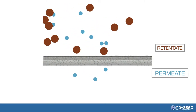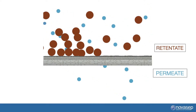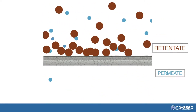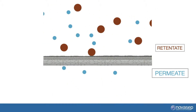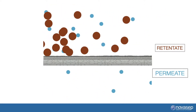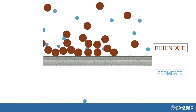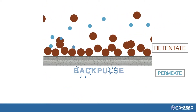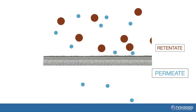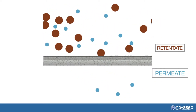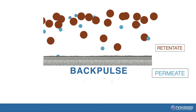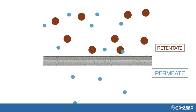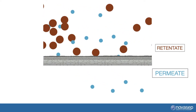In production, transmembrane pressure or TMP is a driving force that allows the permeate to pass through the membrane despite the natural resistance to do so. Resistance to permeate flow is a combination of the inherent resistance of the membrane and the additional resistance caused by the fouling layer. When this additional resistance is too high, permeate flux decreases.